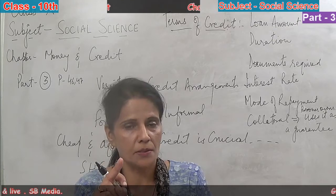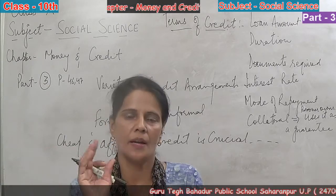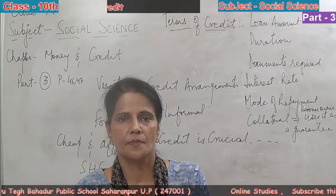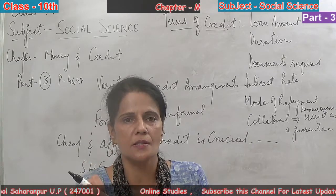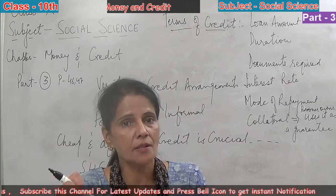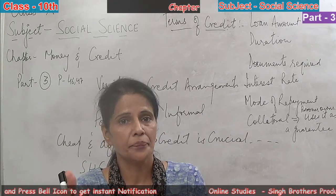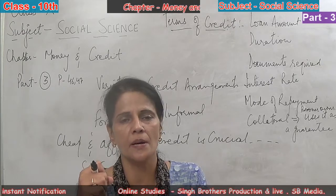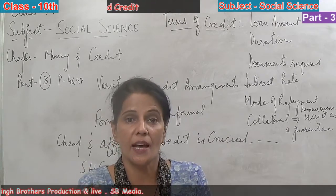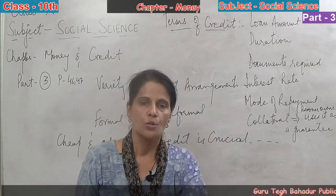I told you that without collateral, banks and the formal sectors will not allow borrowers to borrow money from their institution. Collateral is an asset that the borrower owns. In banks it is in the form of LIC policies, savings, FDs, etc. In rural areas it is in the form of jewellery, tractor, land, titles, etc. The borrower owns the collateral and uses it as a guarantee — gives it to the lender as assurance that the loan will be repaid. So collateral is a guarantee to the lender from whom we are taking the loan.